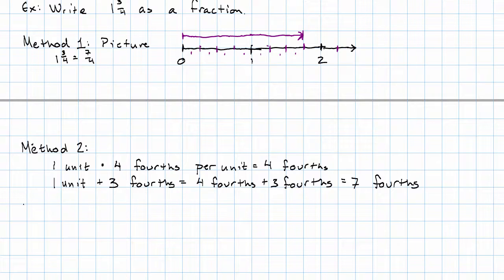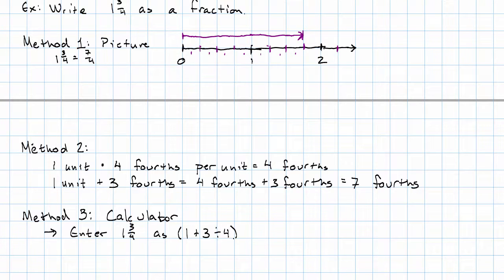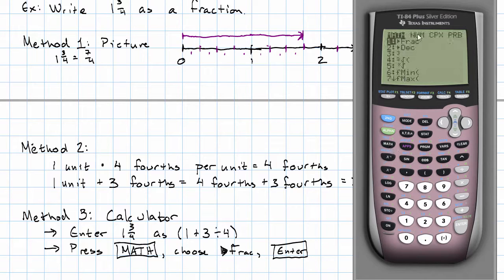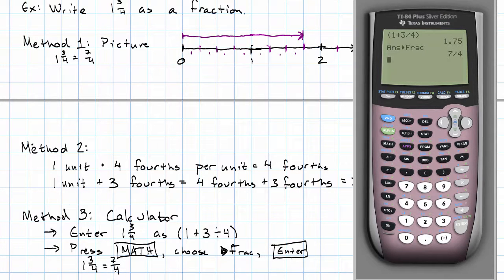Method three, again, we'll use the calculator — this is a little bit easier in this direction. We'll enter 1 and three-fourths as one plus three divided by four in parentheses. Then we just want to convert that into a fraction, so we'll choose math, choose the very first option, "to fraction," hit enter, and we get the 7 fourths that we expected. Which method should you use? You should use whichever method is most convenient at the moment. But you should be aware of the non-calculator methods because, one, those will help you get a reality check on your answer, and two, those will help you understand what's going on as we move into more complicated sorts of problems.